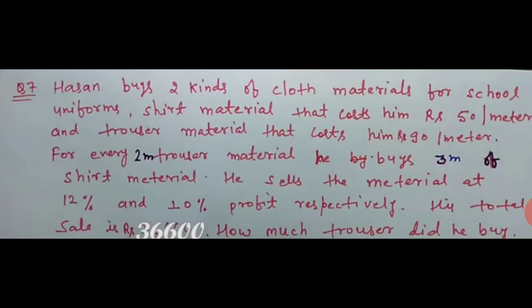He sells the materials at 12% and 10% profit respectively. His total sale is rupees 36,600. How much trouser did he buy? The question is telling you that Hassan has two kinds of clothes for school uniform: one shirt and one trouser. The shirt is 50 per meter and trouser is 90 per meter.